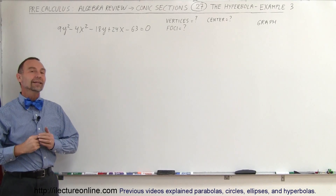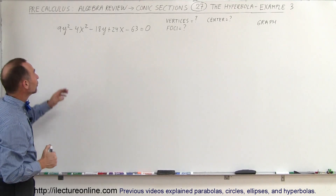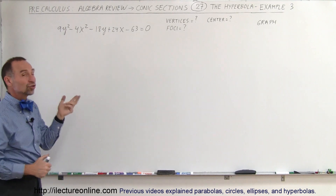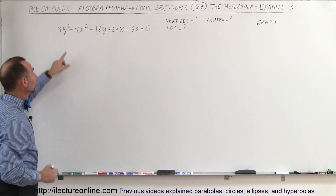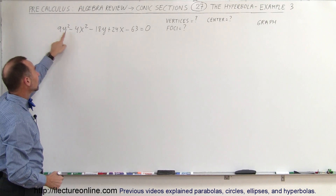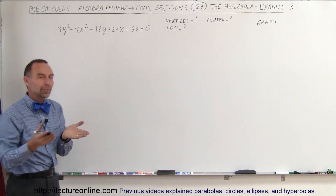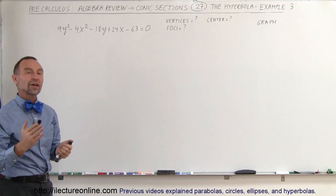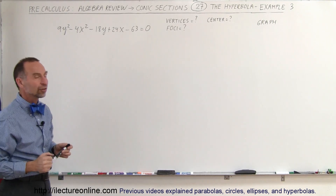Welcome to our lecture online. In our next example, you can notice that here we have the y and the x interchanged. We're going to solve this hyperbola, but since the y comes first and it's positive and the x comes second and it's negative, you expect the hyperbola to open upward and downward — the transverse axis is going to be vertical in this case.